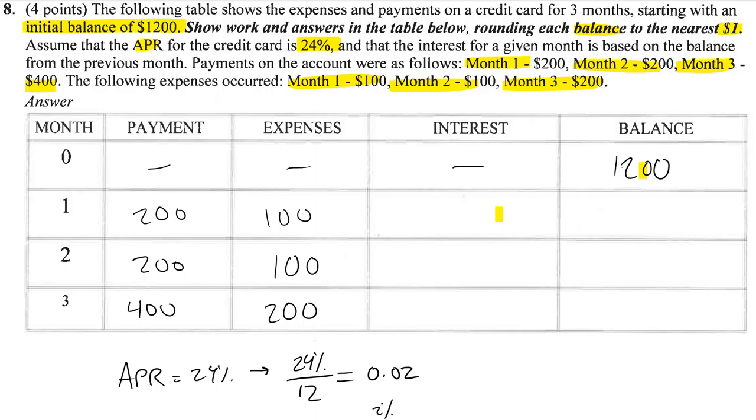We're going to calculate our interest by taking the balance from the previous month. The payment will decrease the balance, expenses will increase it, and we'll add the interest. So overall, the things that affect our new balance are the payment, which decreases it, the expenses, which increase it, and the interest based on the previous balance. Let's break this into smaller parts to make life easier.